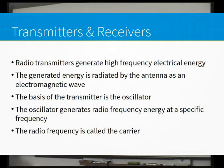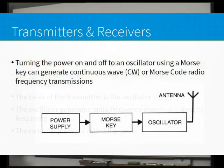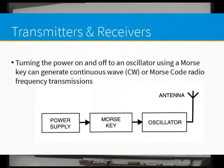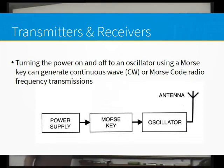That's just a term we use — it can carry all sorts of information. Turning the power on and off to an oscillator using a Morse code key can generate what we call continuous wave, or CW. That's what they used to use for Morse code, and they still use Morse code actually. So if you've got a power supply, a Morse key controlling the power to the oscillator, and then the oscillator to the antenna, that's your simplest transmitter you can ever get.